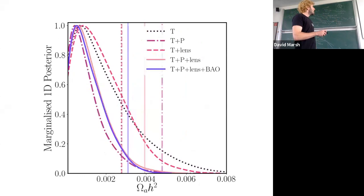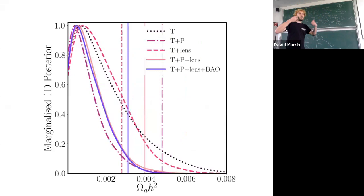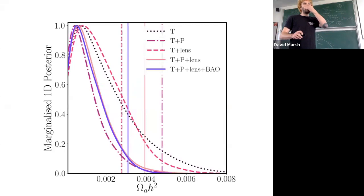Taking one of these bins — the strongest constraint at 10^{-26} eV — and breaking down what happens to the posterior including different observables: using just the temperature palette gives the black line. Adding temperature plus polarization (dark dashed purple line) improves the bound by a factor of about two. Interestingly, including lensing weakens that bound slightly — telling you there may be a very marginal preference in the lensing, and that the lensing alone does not place a stronger constraint on these light particles. This is why they could be involved in some large-scale lensing discrepancies.